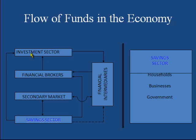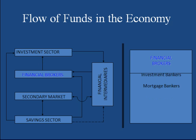Savings sectors have surplus funds, and there is a flow of funds from savings sector to investment sector — they can invest money in investment sectors. There is also a flow of funds from financial brokers to investment sectors. Financial brokers represent investment bankers and mortgage bankers. In the case of IPOs or initial public offerings, investment bankers buy shares from investment sectors and provide funds to the investment sector. These investment bankers then sell these shares to the general public, so there is a flow of funds from savings sector to financial brokers.